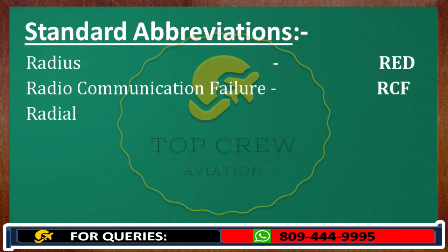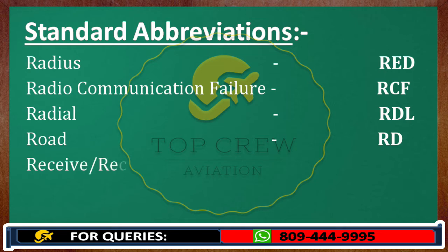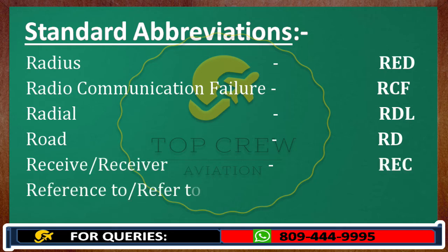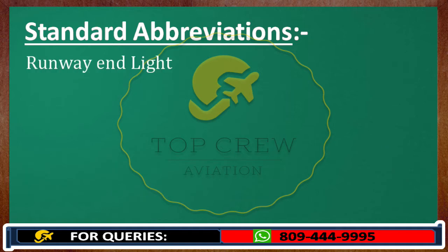Radial: RDL. Road: RD. Receive or receiver: REC. Reference to or refer to: REF. Runway end light: RENL.